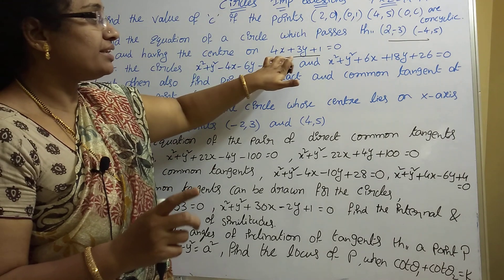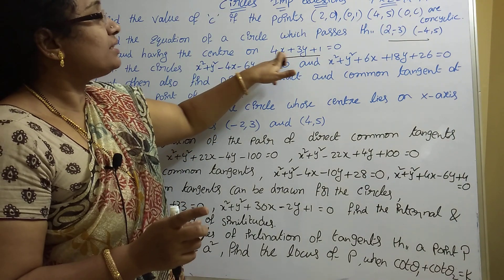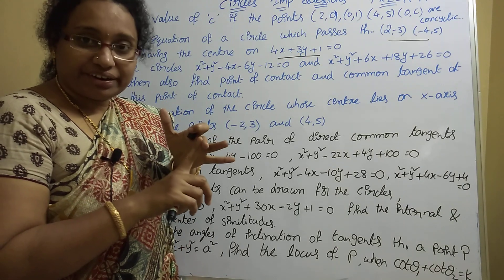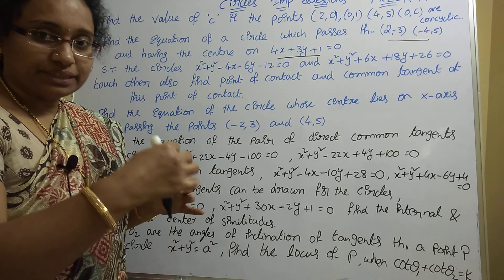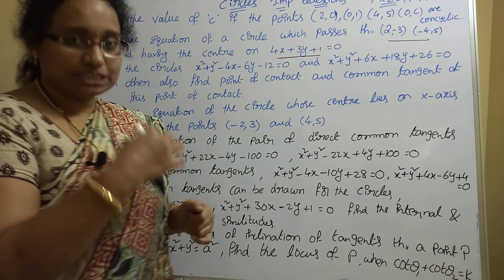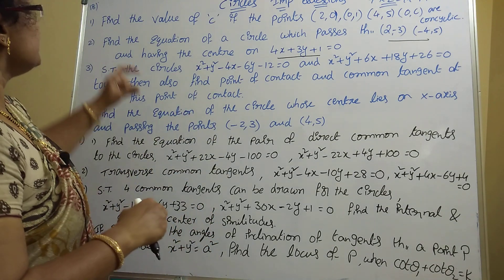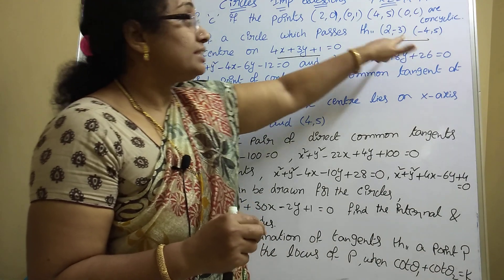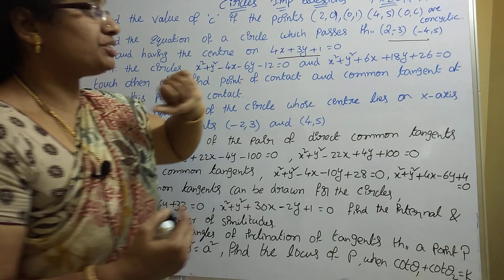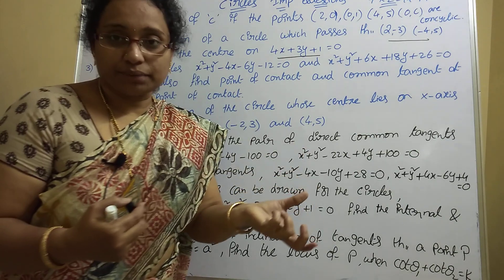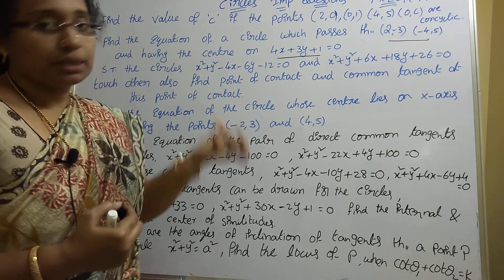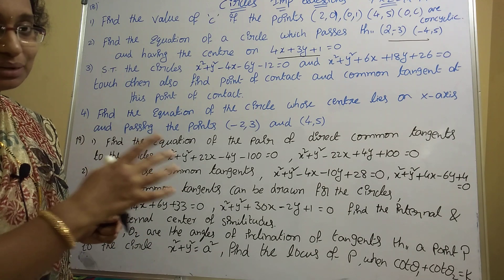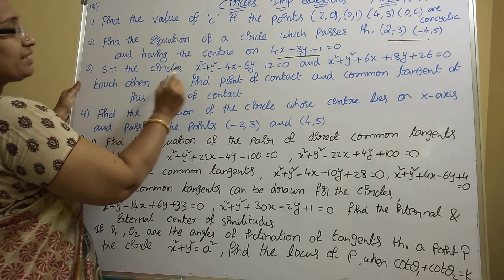For the third condition — the center lies on 4x + 3y + 1 = 0. The center formula is (-g, -f). Substitute (-g, -f) into the line equation to get the third equation. Solve all three equations to get g, f, c. Then apply them in the general equation — that is the answer. Don't memorize numbers; practice the procedure.